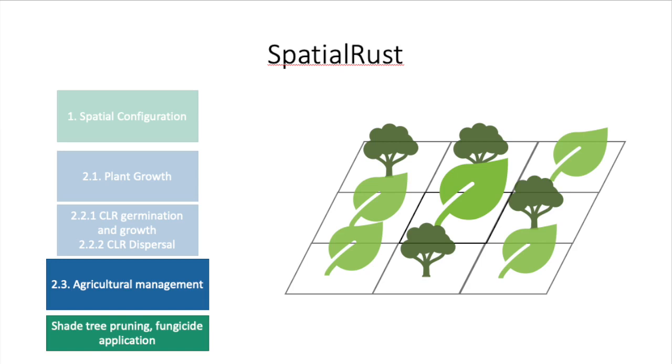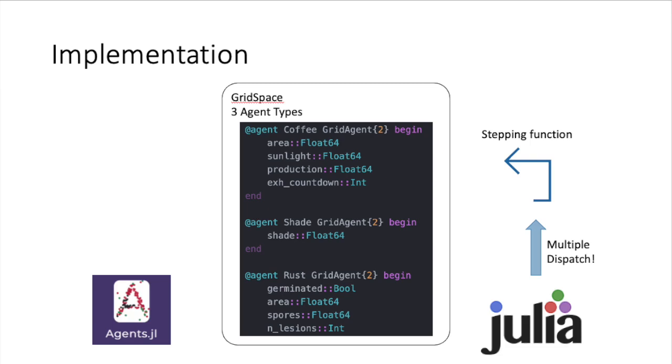The model was initially developed in NetLogo, but NetLogo has limited compatibility with distributed computing, and also this version was rather slow. In order to implement it in Julia, I used the package Agents, which allows to create an agent-based model object and step through very easily.